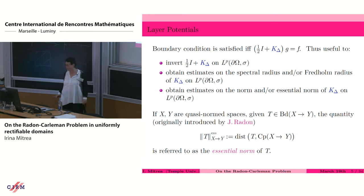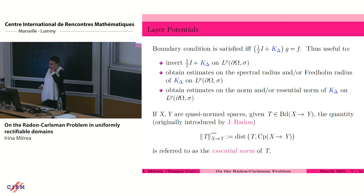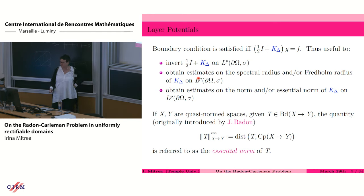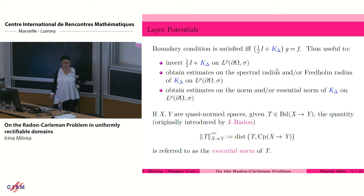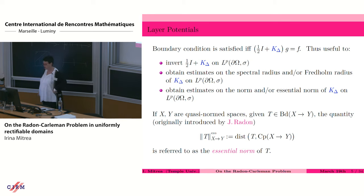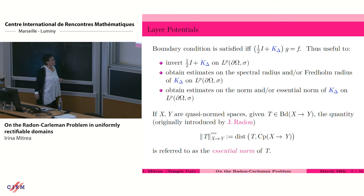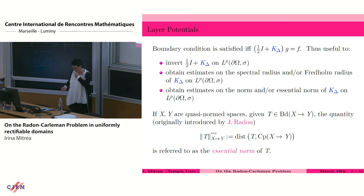In connection with the issue of inverting one-half identity plus K, it's useful to obtain information on the spectral radius, or the Fredholm radius, of this operator acting on Lp, and to obtain estimates on the norm and the essential norm of this operator. Let me remind a few concepts here — I'm going to talk about the essential norm and Fredholm radius.